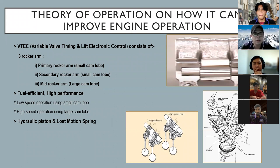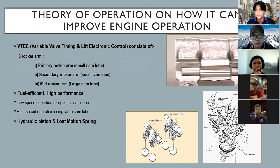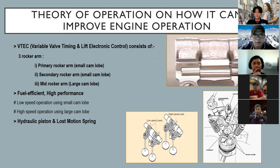Thank you Amirol. Hi, my name is Jimmy. I'm going to explain the theory of operation on how VTEC can improve engine operation. VTEC consists of three rocker arms: the primary rocker arm, secondary rocker arm, and mid rocker arm. The primary and secondary rocker arms work along with the small cam lobe, while the mid rocker arm works along with the large cam lobe. VTEC is well known for its fuel efficiency and high performance. During low speed operation it works using the small cam lobe, and during high speed operation it works using the large cam lobe.